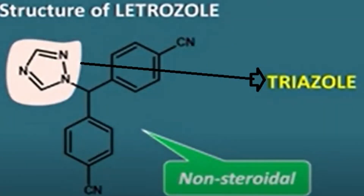The structure of letrozole 2.5 mg mostly consists of two main parts: one is nonsteroidal and the second one is triazole. Mostly the triazole component is responsible for the activities.